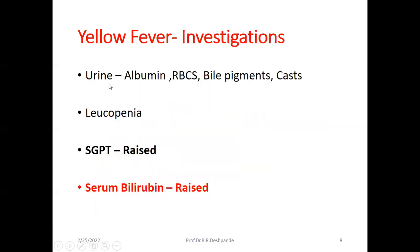For investigations, urine routine examination will show albuminuria, red blood cells in urine (hematuria), bile pigments due to jaundice, and casts indicating renal parenchymal inflammation. In blood tests, leukopenia is seen — white blood cell count falls to 4,000 or even 3,000 per cubic mm, versus the normal 4,000–11,000. Leukopenia is also seen in typhoid. Liver function tests show raised SGPT due to liver parenchyma damage, and serum bilirubin is raised due to jaundice.